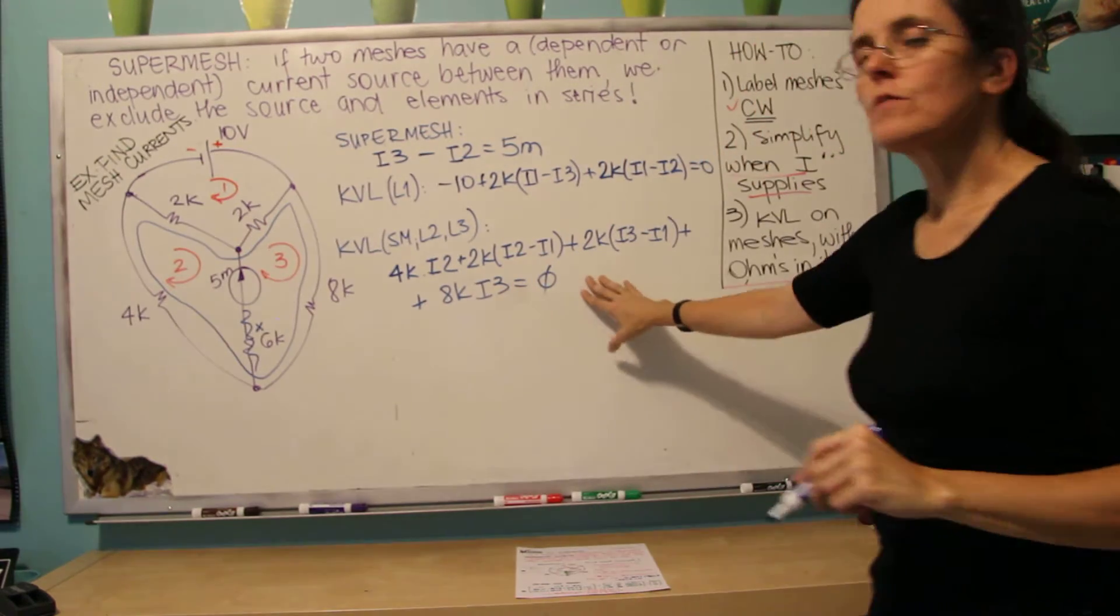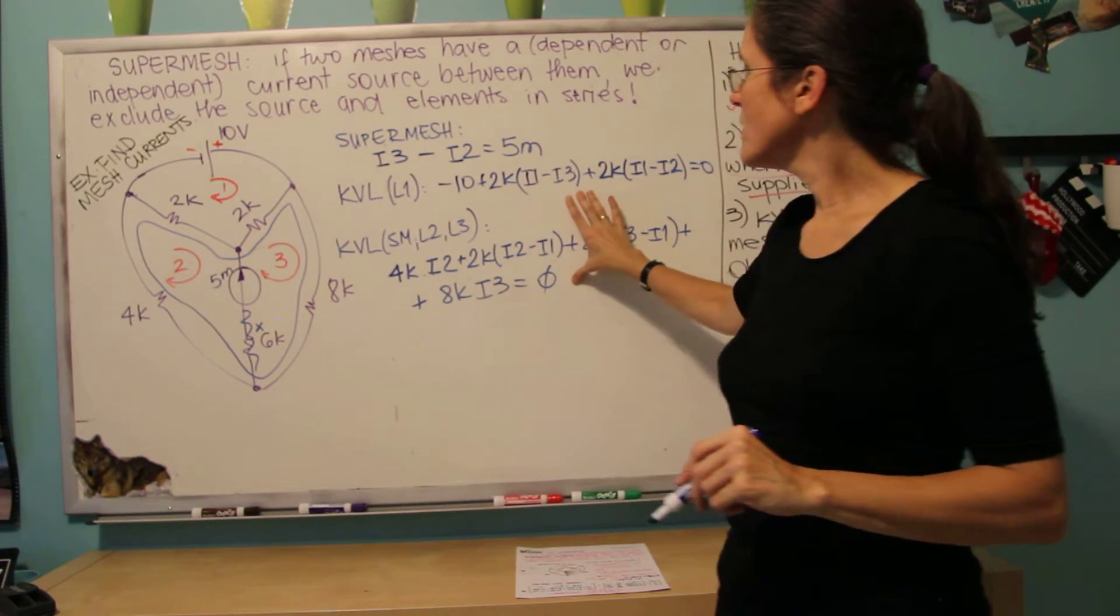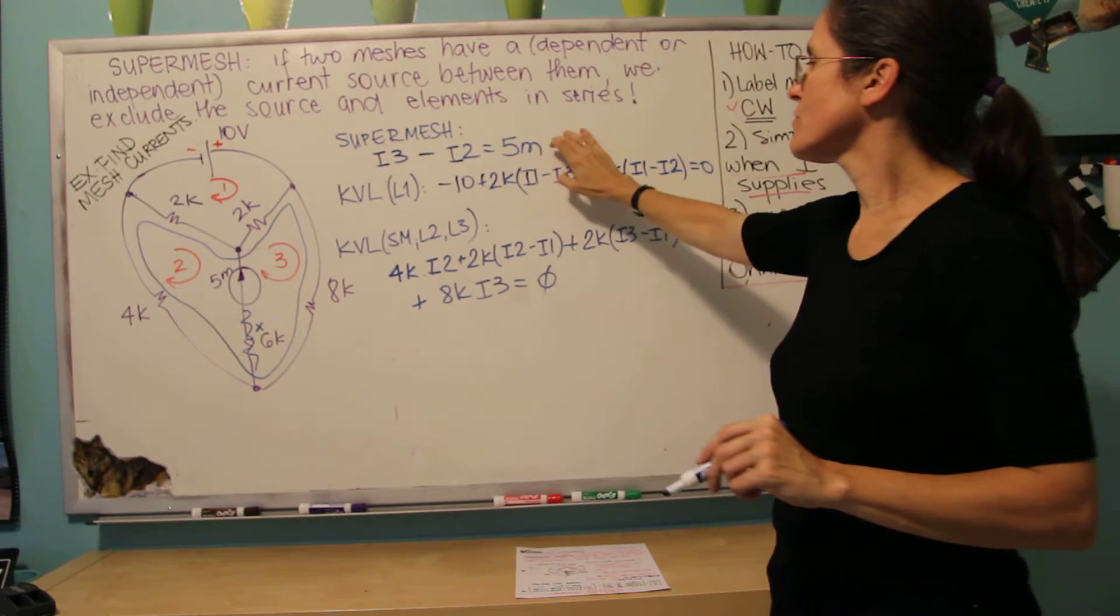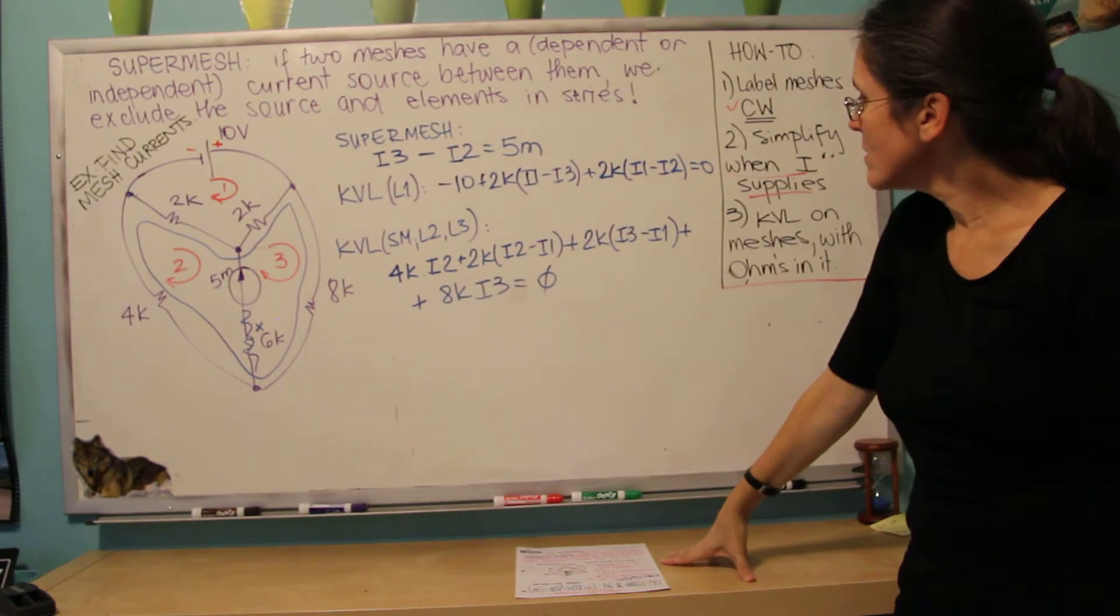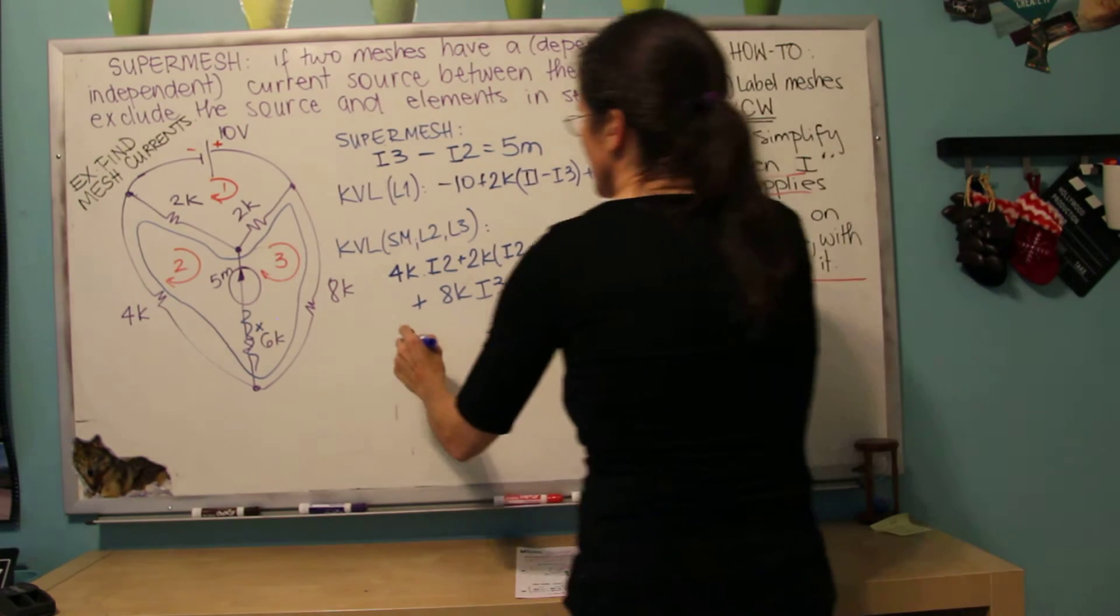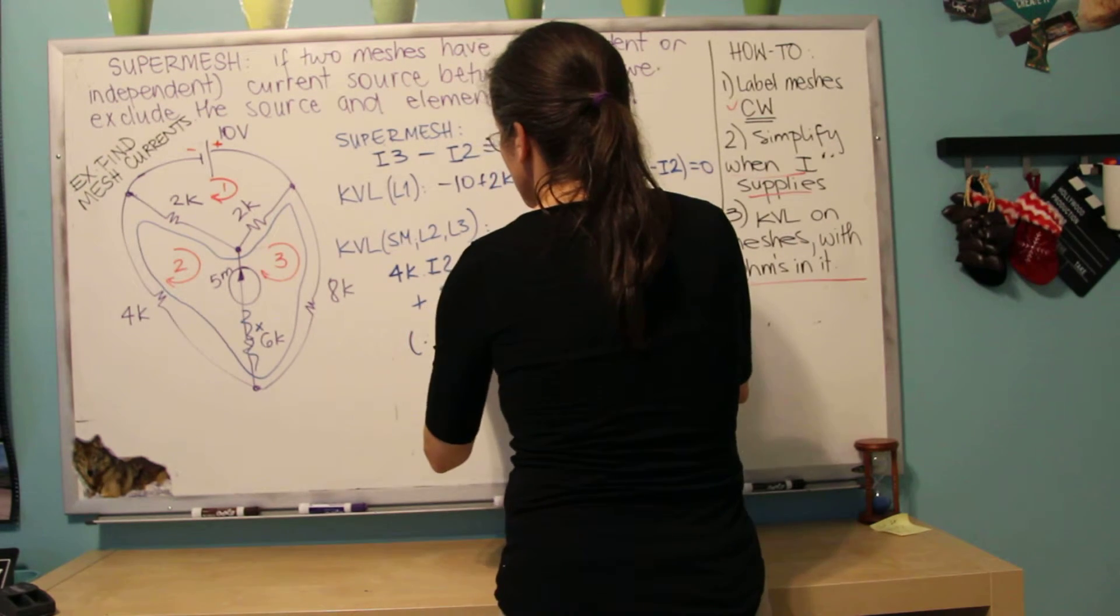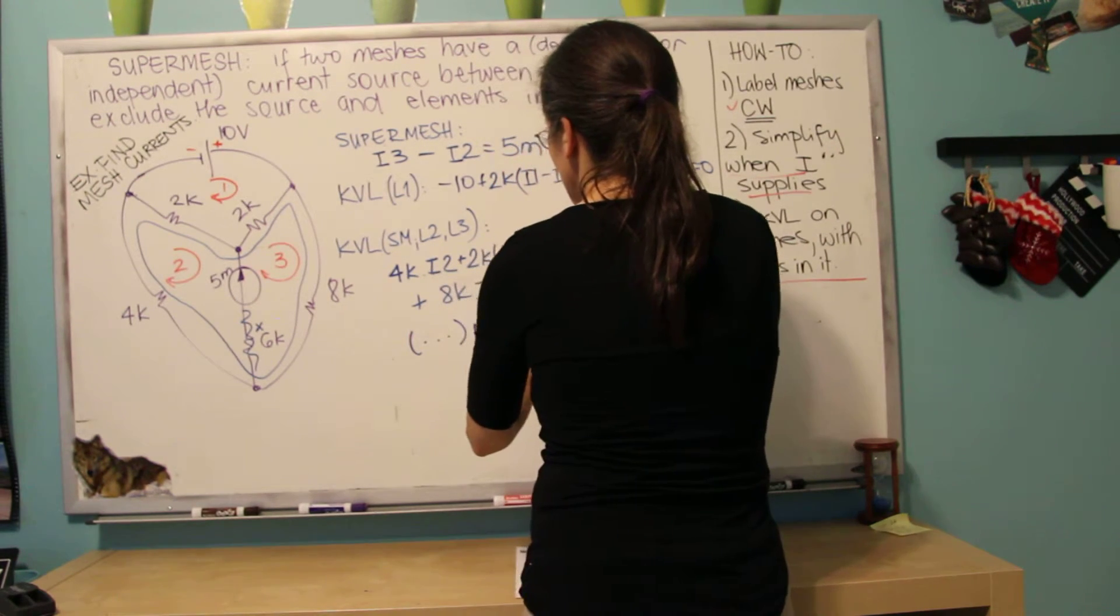So these are the two equations for KVL. You can say that these are three. If you want to use this as a third equation, you can to solve. And here comes math magic.